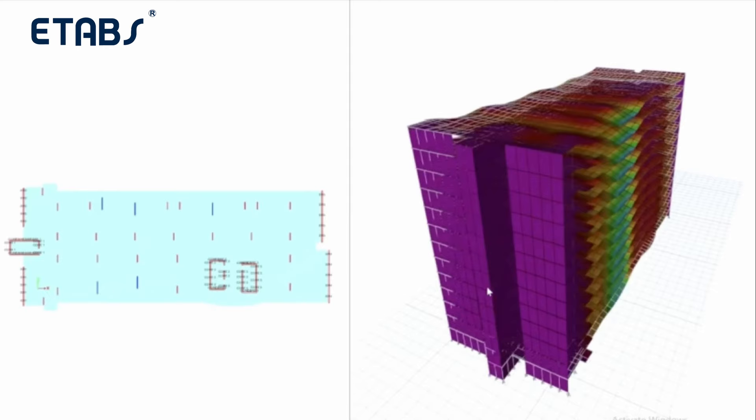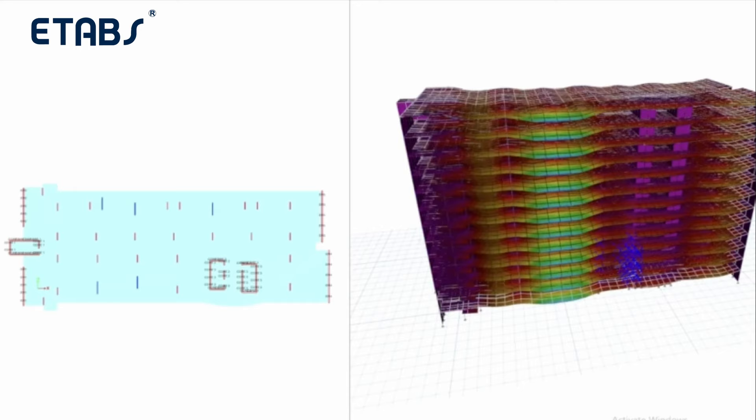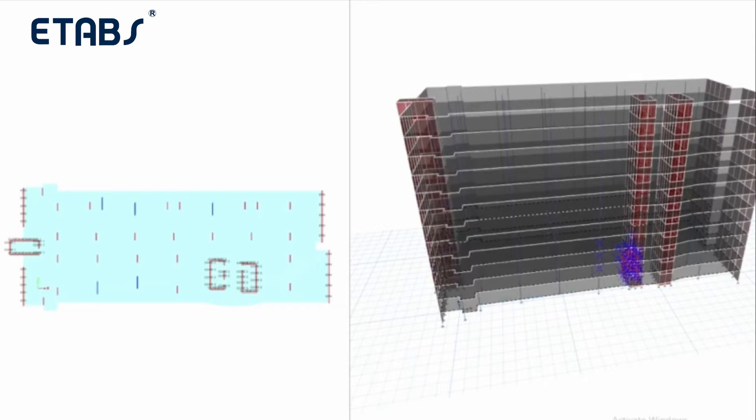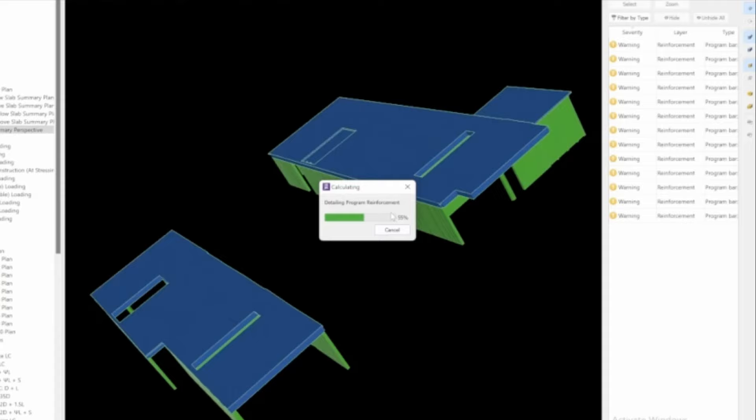Now let's run another piece of software as well. We've got the analysis running in the background — we'll hit run again for this one, break the model, delete the results, and then hit run. So now we've got ETABS running and we can go back and see that RAM Concept is still running too.